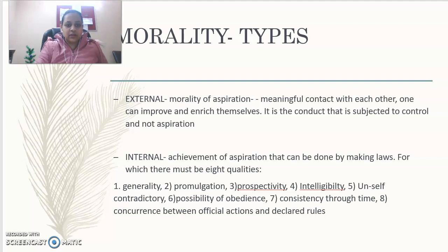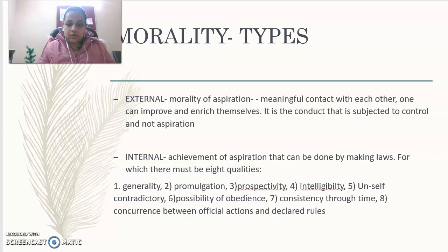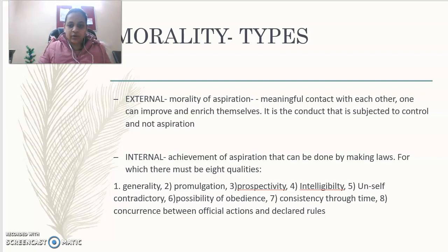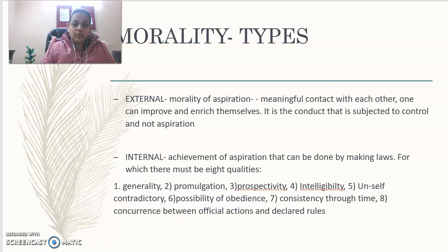By generality, it means the law should be general in nature and applicable to everyone at the same time and place. Promulgation means there should be proper declaration of rules by the authorities. Prospectivity means laws should be applicable for all time to come and have prospective effect for future acts. Intelligibility means the law should be understandable by every person living in society — it must be comprehensive in nature. Consistency through time means the law should be stable for all time to come. Concurrence between official actions and declared rules means the officials of the state must also follow their own rules.